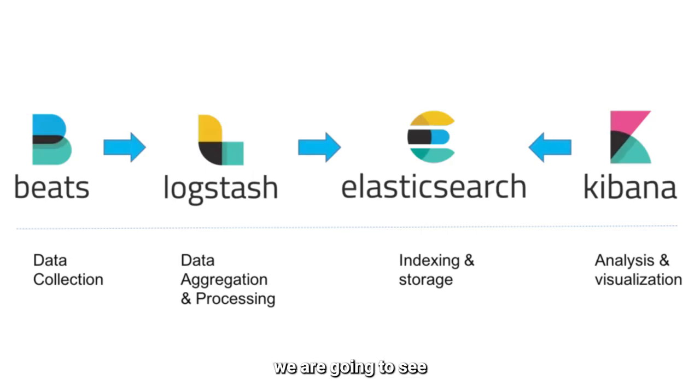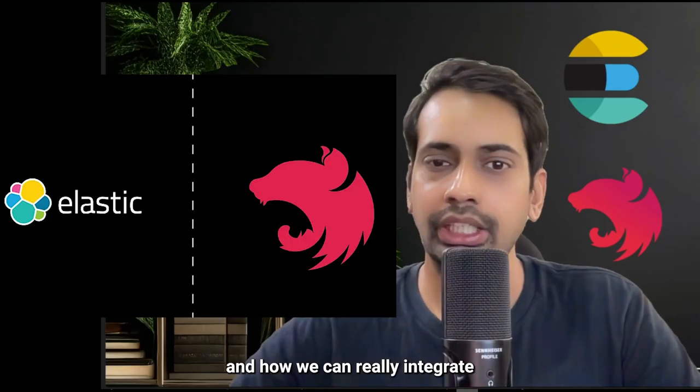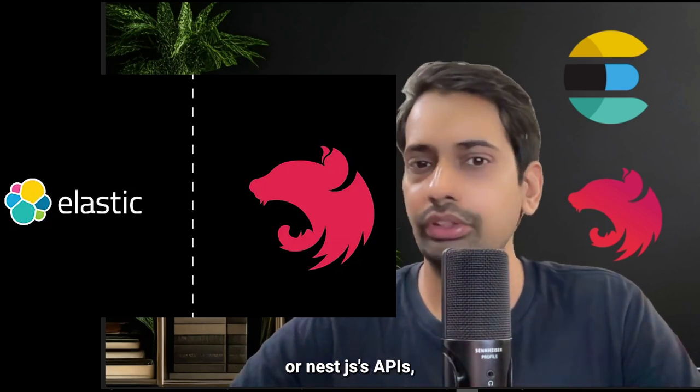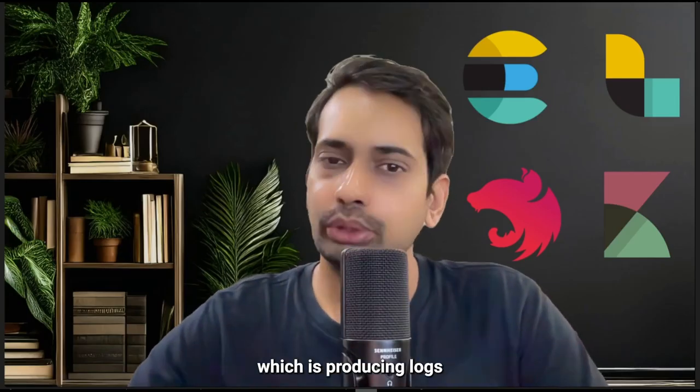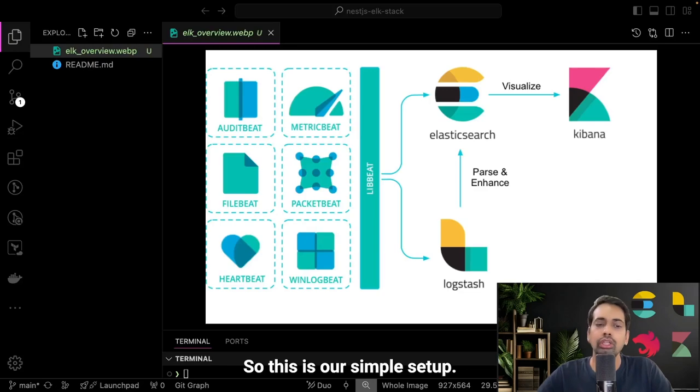Hi everyone and welcome back. In this video we are going to see how we can containerize the ELK stack — Elasticsearch, Logstash, Kibana — and how we can integrate that with a NestJS service or NestJS APIs which is producing logs, and how we can push those logs to Elasticsearch through Logstash, or through Filebeat to Logstash to Elasticsearch, and then visualize it through Kibana.